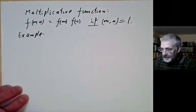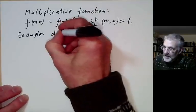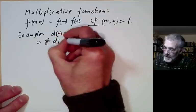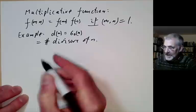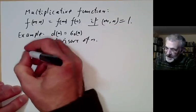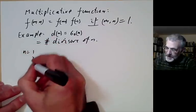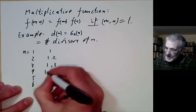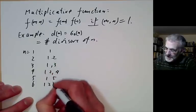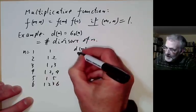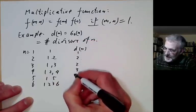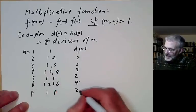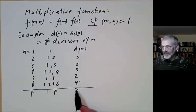The first example is the divisor function, denoted d(n) or σ₀(n), which is just the number of divisors of n. Looking at n = 1, 2, 3, 4, 5, 6, we get d(n) = 1, 2, 2, 3, 2, 4. More generally, if n is prime, the only factors are 1 and p, so d(n) = 2. On the other hand, if n has a lot of factors — for instance, something like 60 — then d(n) can be quite large.